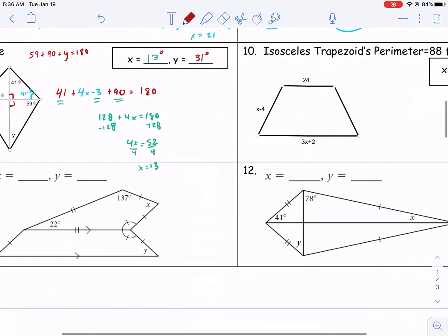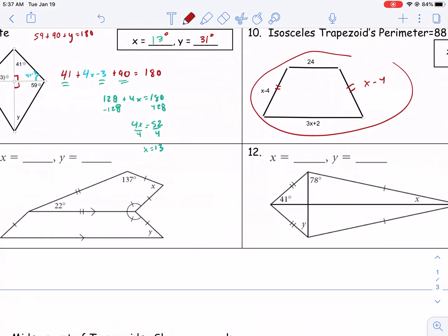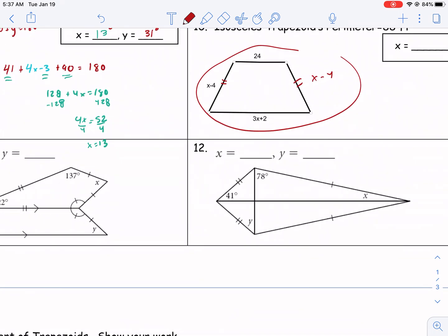Isosceles trapezoids - we are pretty familiar with how to do this. These are congruent, so just make sure that this is x minus 4 over here and add these all together. Here we go, tough problems here. This one's like the same one we've been doing with the kites. Don't forget this is 90. So 180 minus 41 minus 90, you should get 49 here for y. And then 180 minus 90 minus 78, you should get x equals 12.